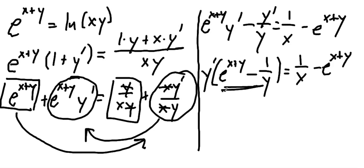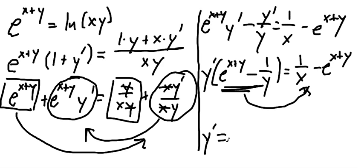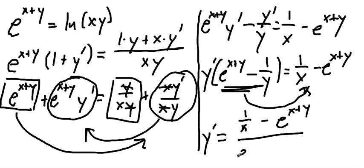Dividing both sides by that factor, y prime equals 1 over x minus e to the x plus y, all over e to the x plus y minus 1 over y. It looks sort of symmetric in some way. And that is our final answer.